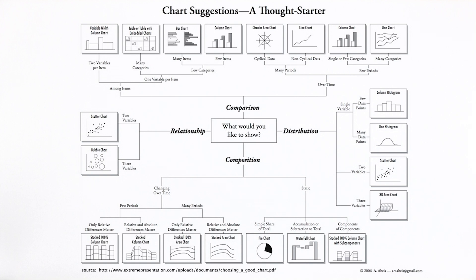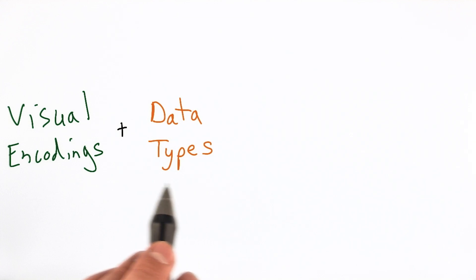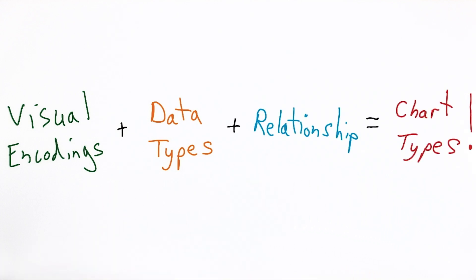In navigating this jungle, I like to often start from first principles. Chart types are simply a set of visual encodings applied to data types and combined with some relationship between those data.